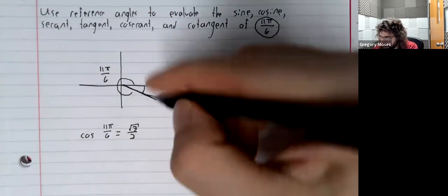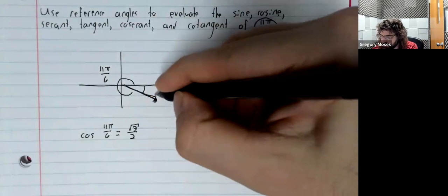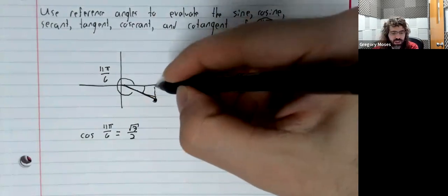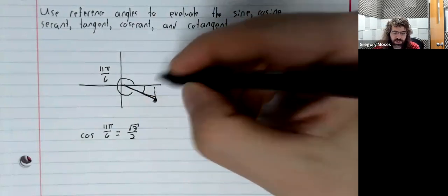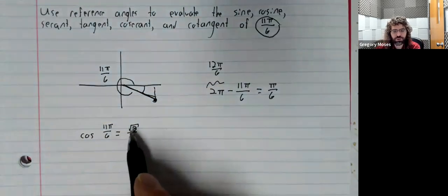And therefore, we're in the first quadrant. This x-coordinate is positive. So this is positive the square root of 3 over 2.